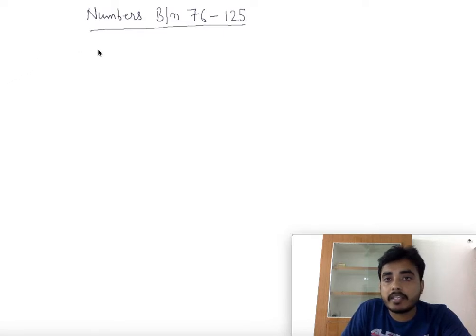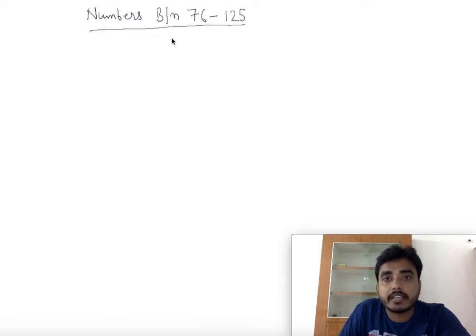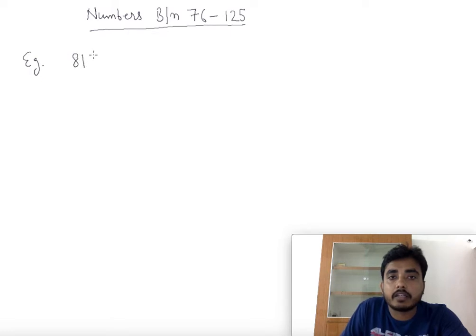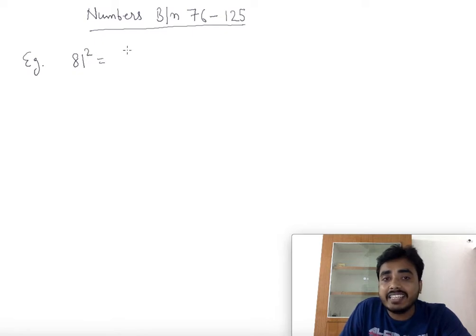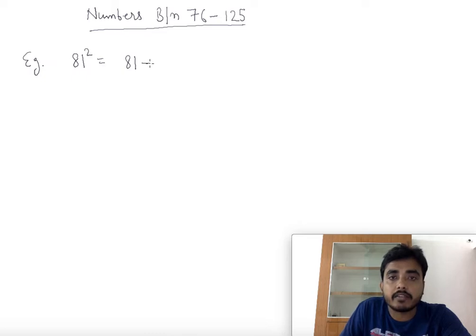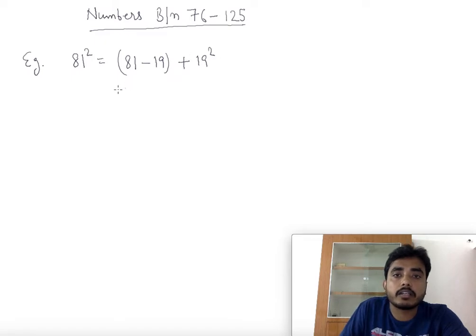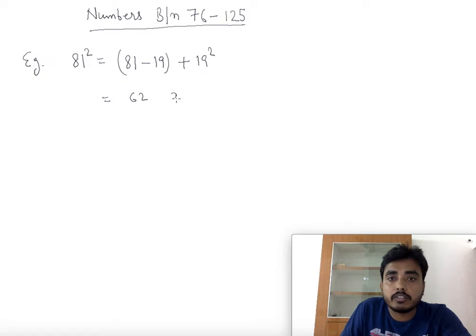If the number is between 76 and 125, we take our base as 100. Let's find the square of 81. 81 is 19 less than 100, so we compute 81 minus 19 plus 19 squared. 81 minus 19 is 62, and 19 squared is 361. We take the last two digits — 61 — and carry 3 to 62, giving 6561.